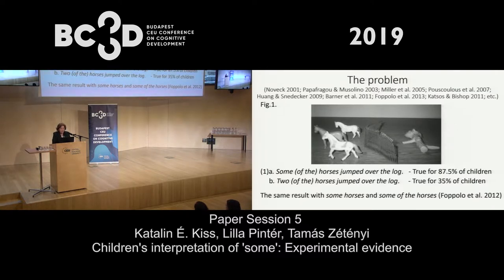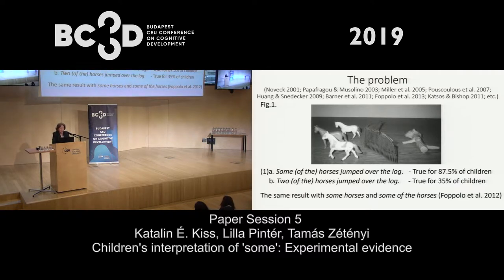Interestingly, adults reject both of these sentences. These sentences are logically true, because if all of the horses jumped over the log, then it's also true for some of them; or if three have jumped over the log, then two must have jumped over the log as well. So why is it that adults reject these sentences, and why is it that children act differently?